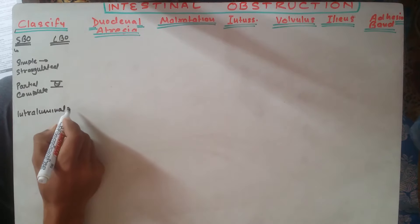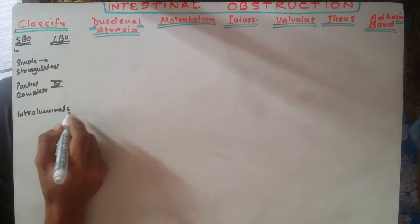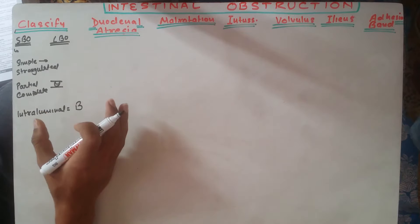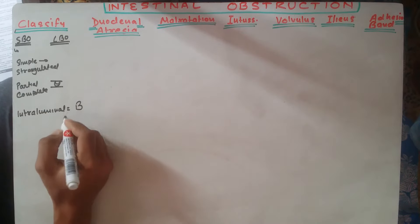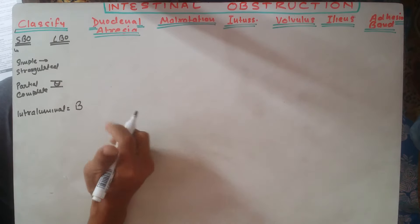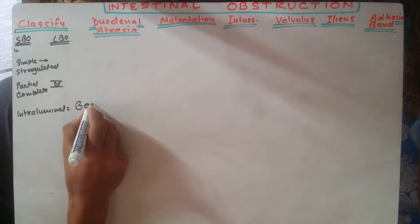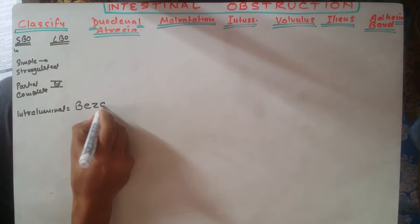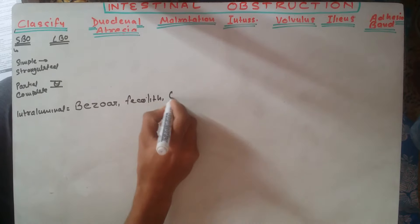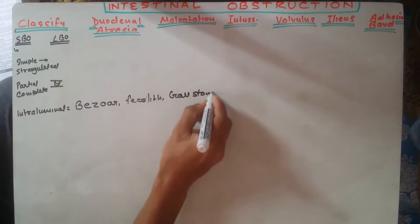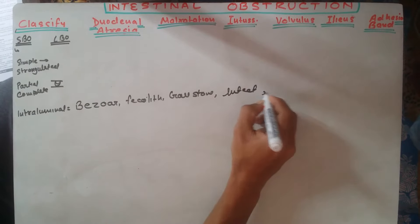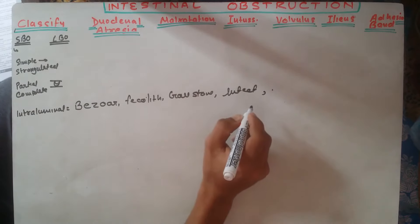Intraluminal causes include gallstone, bezoar formation — bezoar means when thick material gets incorporated with indigestible substances like hair, forming an indigestible bolus that blocks the intestine — as well as infection and tumors.